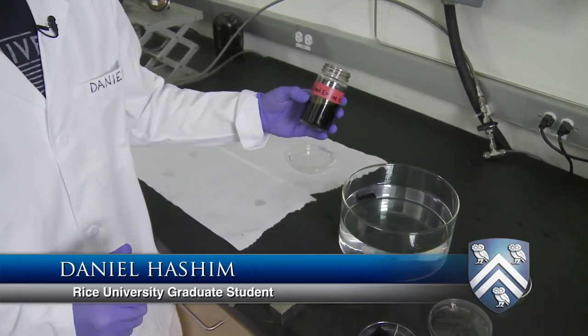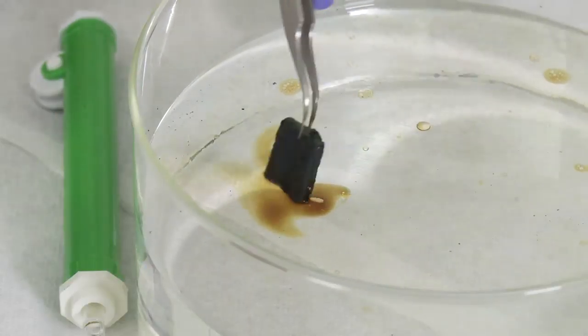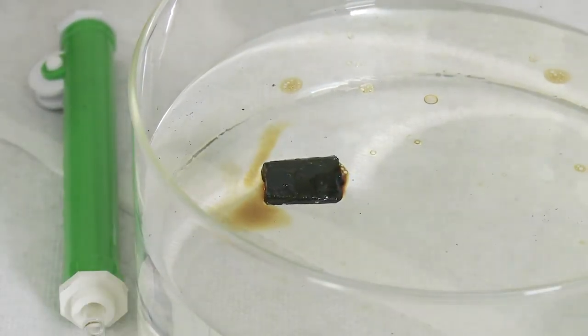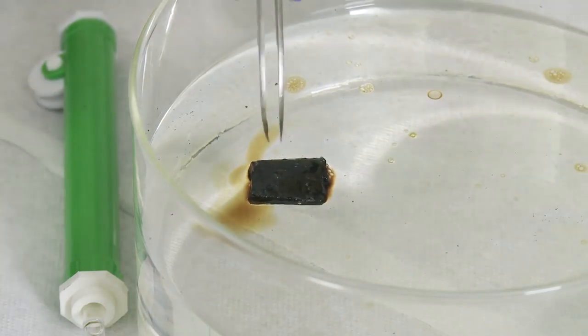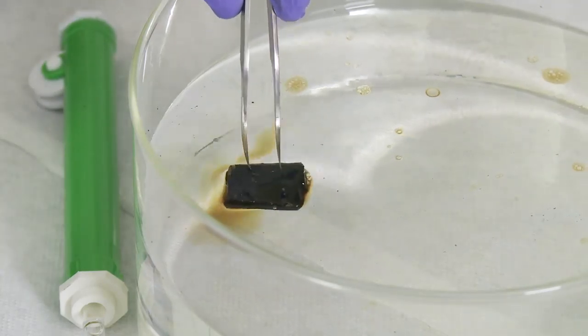I'm going to take one of our carbon nanotube sponge materials and drop it right there on the oil, and you'll see immediately it starts to absorb the oil.